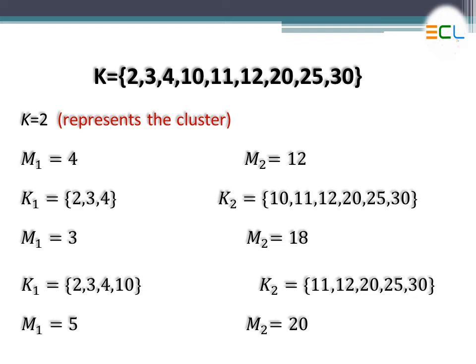You then repeat the same procedure, checking whether each object is closer to m1 or m2, and re-form the clusters. 2 and 3 and 4 and 10 have less distance with m1, so they come into cluster 1. The values 11, 12, 20, 25, and 30 are more closer to 18 compared to 3, so these come into cluster k2. Again you take the mean of k1 values, which gives m1 approximately equal to 4.7 after rounding. For k2, the average of 11, 12, 20, 25, and 30 gives m2 approximately equal to 20.